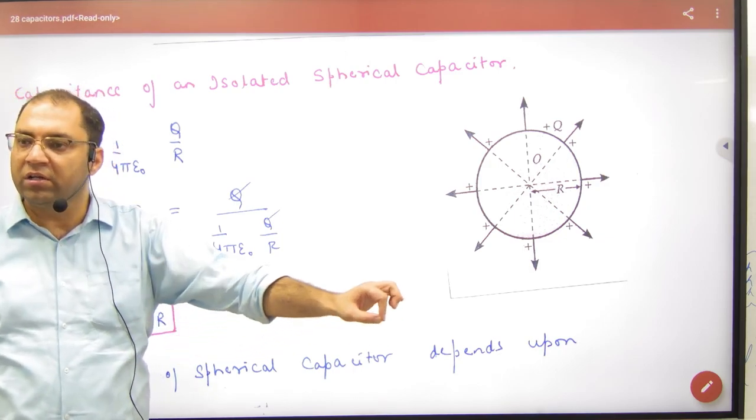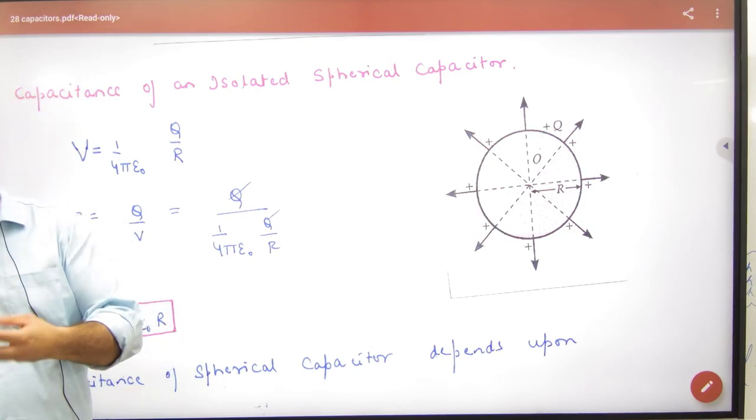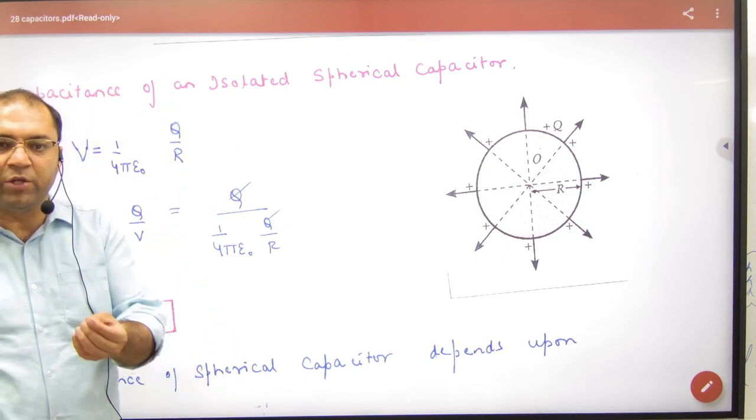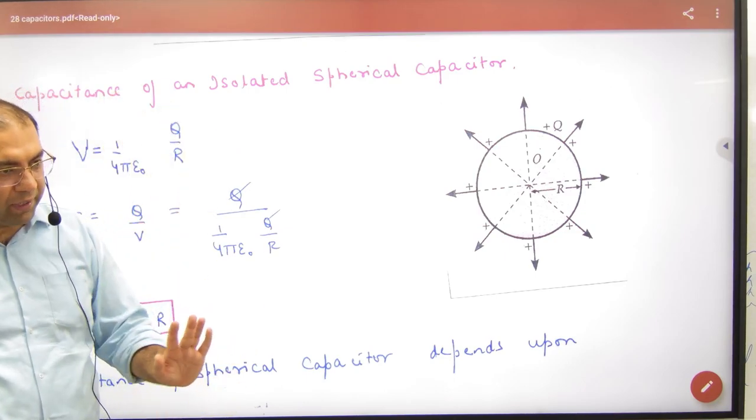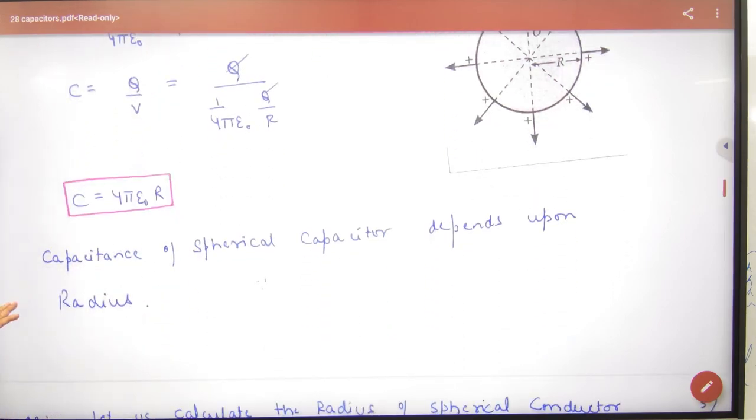4π epsilon not R. So the bigger the sphere, the bigger the capacity will be. Simple. This is the capacity of an isolated capacitor.